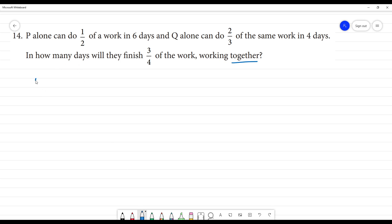P alone, now P. Half of the work, 6 days. Above one complete work, how many days? So this is work and this is days.